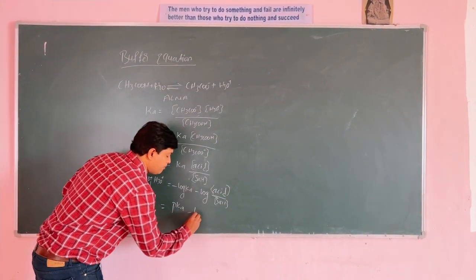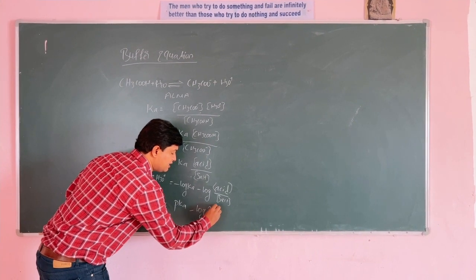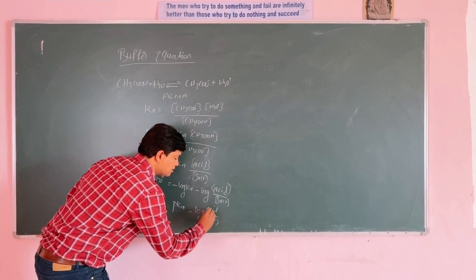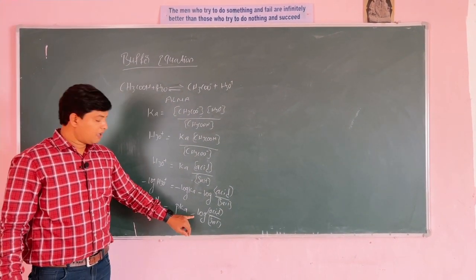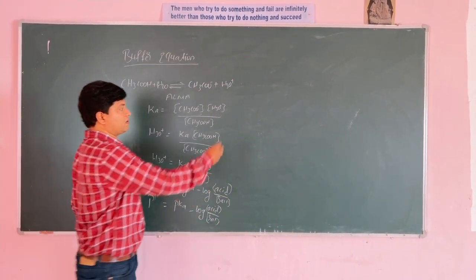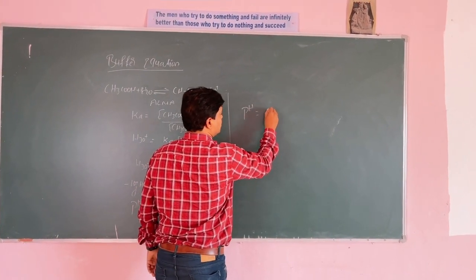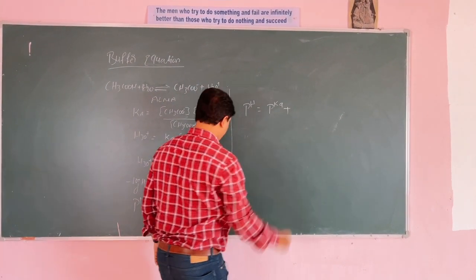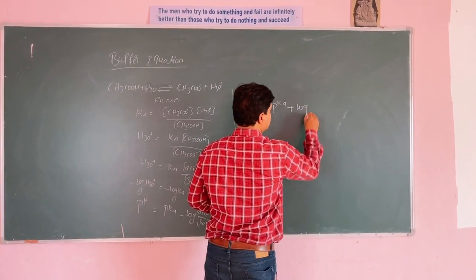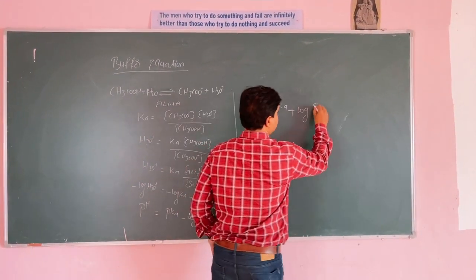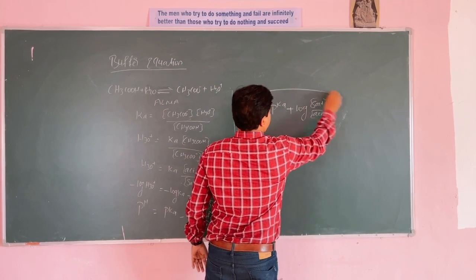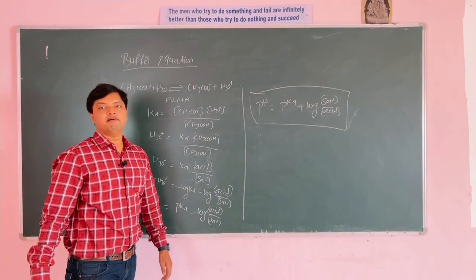The remaining term is the negative logarithm of acid concentration divided by salt concentration. To make it positive, we flip the fraction to salt divided by acid. So pH equals pKa plus logarithm of salt concentration divided by acid concentration. This is your buffer equation.